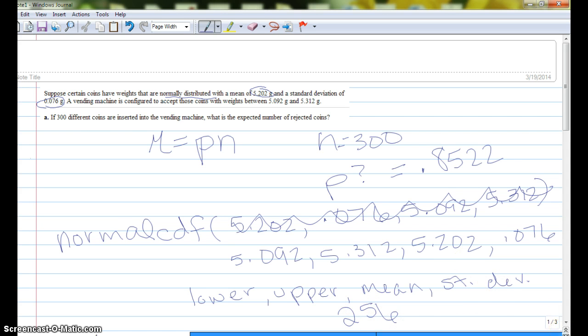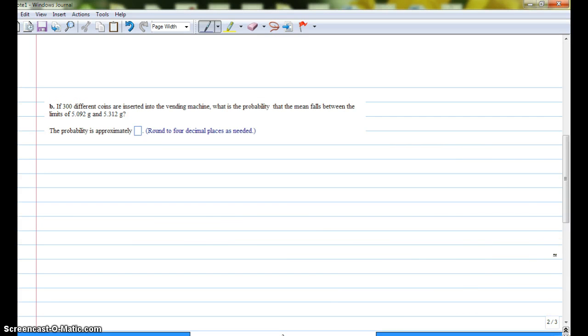Okay, let's go to part B. So part B says if 300 different coins are inserted into the machine, what's the probability that the mean falls between those limits? Now here we're doing a normal where we've got a normal distribution, but instead of just one coin, we're inserting all 300 at the same time.